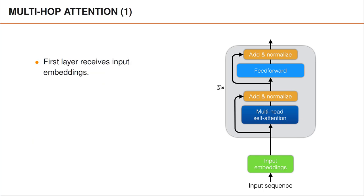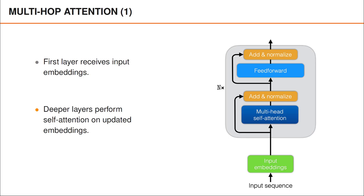If we look at the first layer of the encoder, we perform self-attention on the input embeddings. In the deeper layers, we perform self-attention on the updated embeddings, which hopefully carry more relevant information than the input embeddings. This may seem like a trivial detail since we almost always use deep networks, but using attention in several layers gives something much more powerful than single-layer attention.